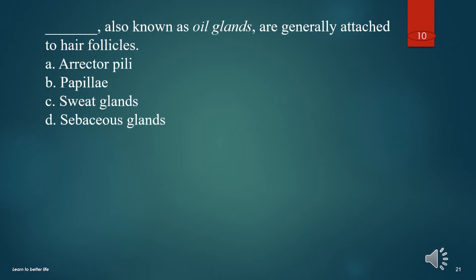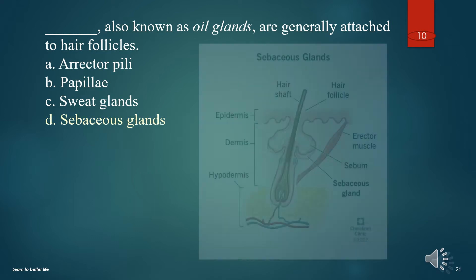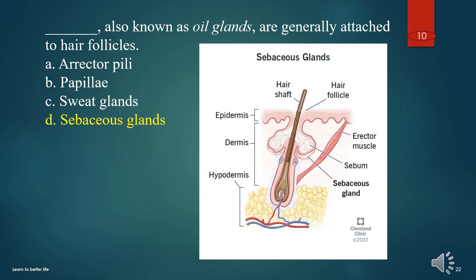What, also known as oil glands, are generally attached to hair follicles? A. Eccrine. B. Papillae. C. Sweat glands. D. Sebaceous glands. The answer is D. Sebaceous glands.